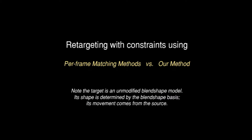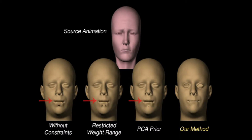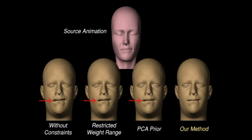We compare the blend shape-based facial animation retargeting results by our method with those by a per-frame retargeting method. While constrained per-frame matching methods produce less distortion compared to results without constraint, artifacts such as an improperly open mouth are not prevented.